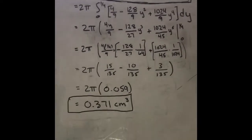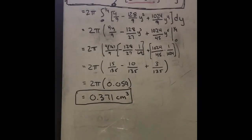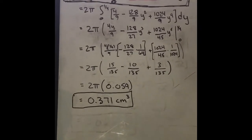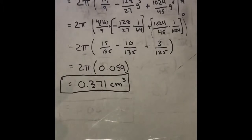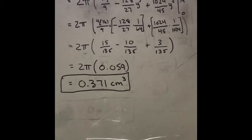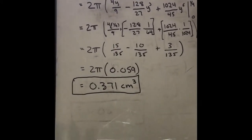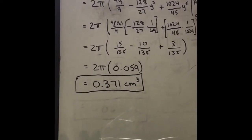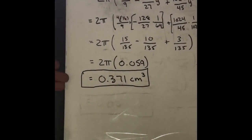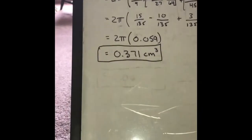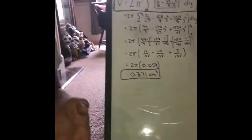After evaluating for the bounds, we found that the volume is equal to 2π times the quantity of 15/135 minus 10/135 plus 3/135. Following the arithmetic and simplification, we found that the theoretical volume of the Skittle would be 0.371 centimeters cubed.